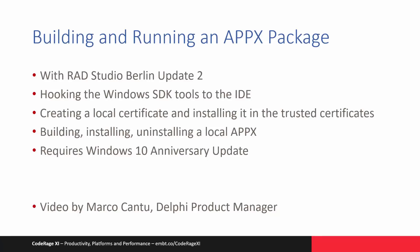Again, we're going to use RAD Studio Berlin Update 2. I'm going to show you how to hook the Windows SDK tools to the RAD Studio IDE, how to create a local certificate and install it in the trusted certificates, and how to build, install, and uninstall a local APPX so you can rebuild and reinstall a new version. All of this will require Windows 10 Anniversary Update.